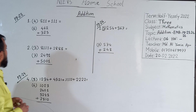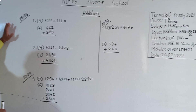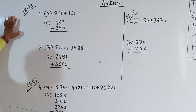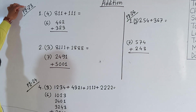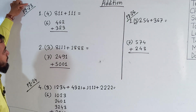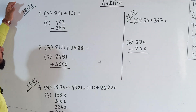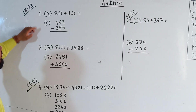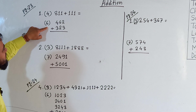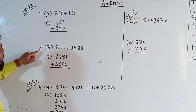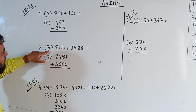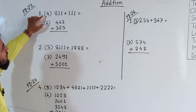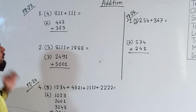Dear students, look at the board. I have already written down some problems on the board from these 3 pages. First of all, page number 23 — you can open page number 23. There are question number 1 and 2. We'll solve question number 1, sub-question number 4 and 6, and also question number 2, sub-question number 3 and 7. So, question number 1, sub-question number 4 at first.